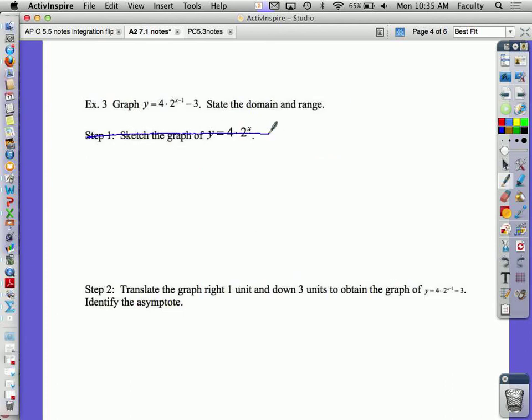Translations. To graph a function of the form y equals a times b to the x minus h plus k. What's so neat about doing exponential functions is everything we've learned up to this point with parabolas, with absolute value, with your square roots, your cube roots. The left, right, up, down, flip, stretch, shrink them. It's all the same. Let's look at example three. I want you to scratch out step one. This graph is right one and down three. So, instead of starting with the table at negative two, I'm going to start at negative one.